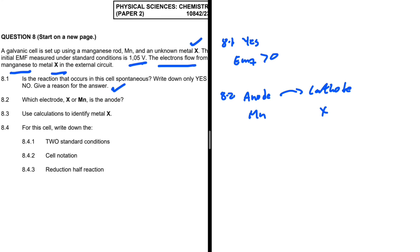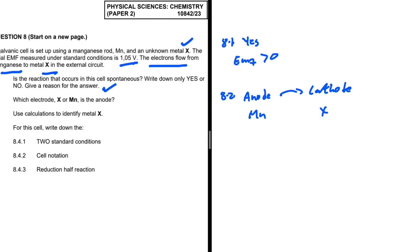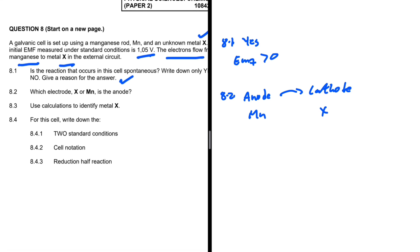Since electrons flow from Mn to metal X in the external circuit, Mn is the anode and X is the cathode. We're simply applying the basic principles of galvanic cells here. That completes question 8.2.